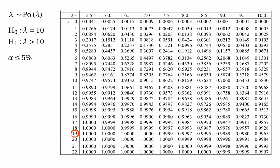What if we got x equals 19? We'd want the probability that x is greater than or equal to 19, which is 1 minus the probability that x is less than or equal to 18. So we calculate 1 minus 0.9928, giving 0.0072 — again smaller than 5%, so we'd reject the null hypothesis. We'd also end up rejecting the null hypothesis if x equals 17, because 1 minus 0.9730 is 0.0270, which is less than 5%.